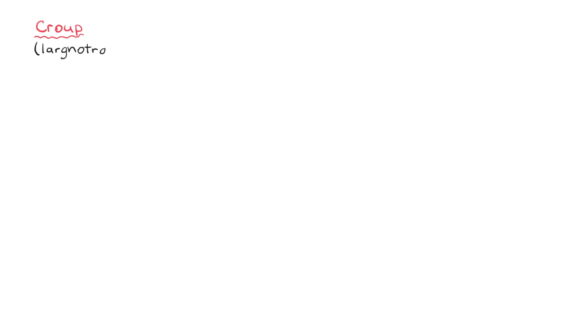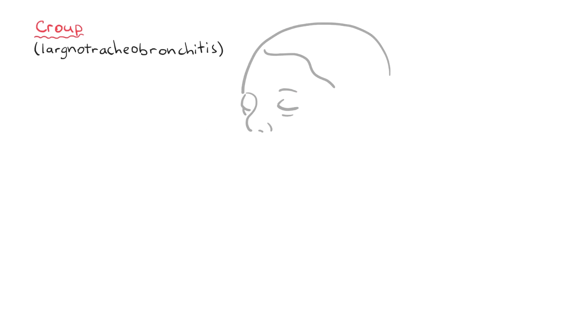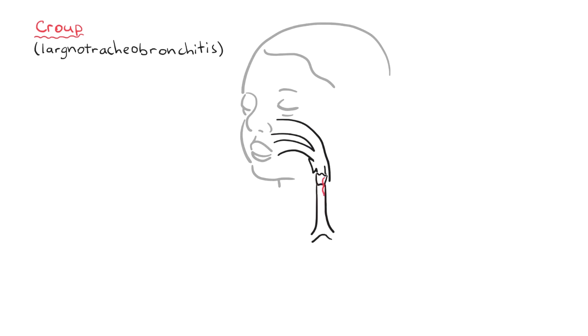Croup, also known as laryngotracheobronchitis, is usually a self-limiting upper airway viral infection. As the name suggests, there is an inflammatory response occurring in the larynx and trachea, causing upper airway obstruction.